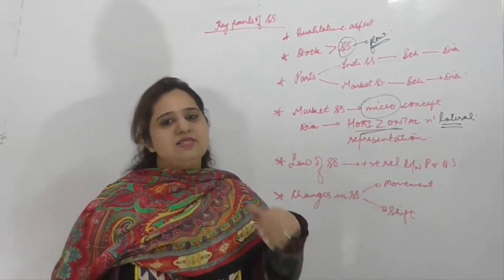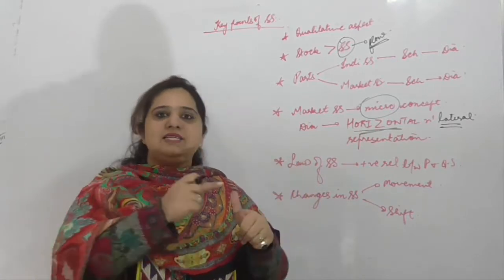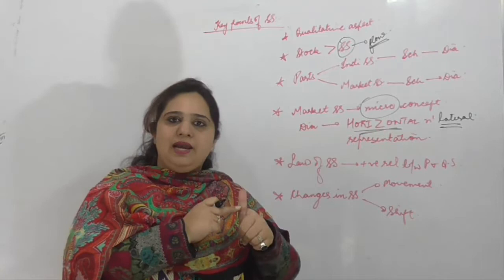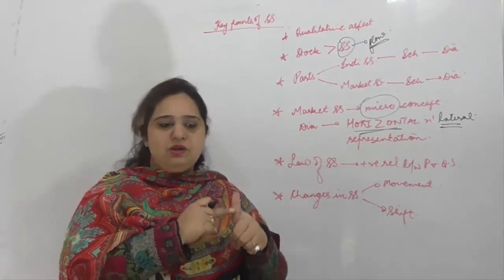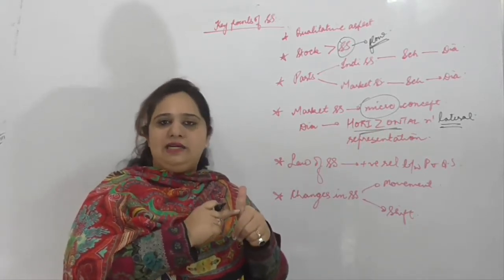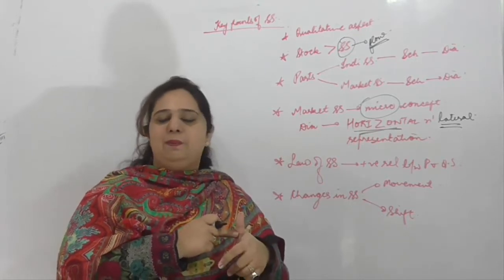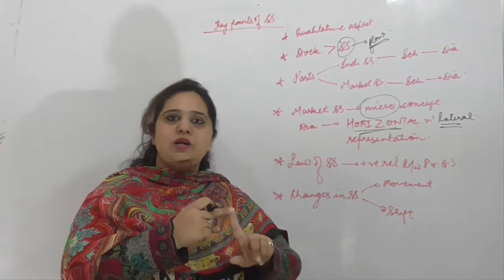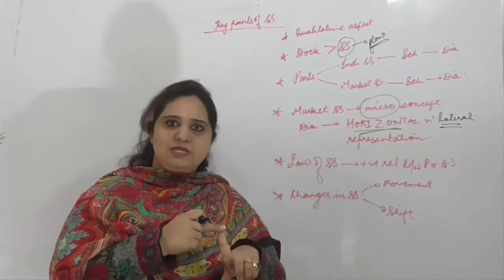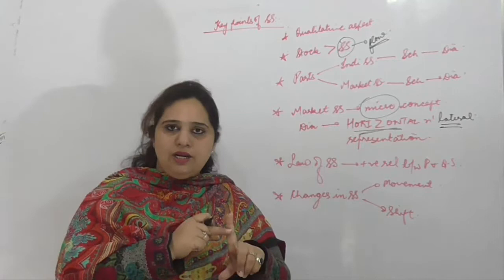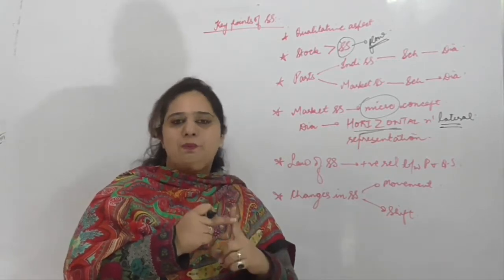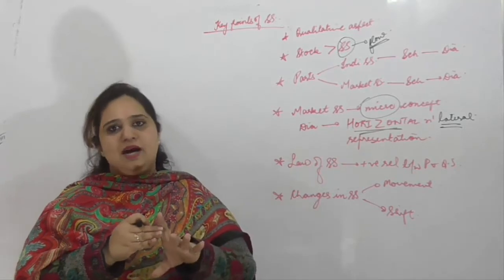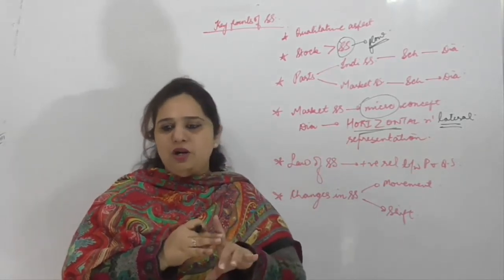Other things का मतलब है सारे के सारे factors जिन्होंने supply of a commodity को affect किया है। Factors को never ignore करना। कौन कौन से factors हैं? सबसे पहले own price of a commodity, then price of factors of production, then price of related goods — और related goods में हम सिर्फ substitute goods consider करते हैं, then goal of the firm, then technology — outdated भी और improved भी।